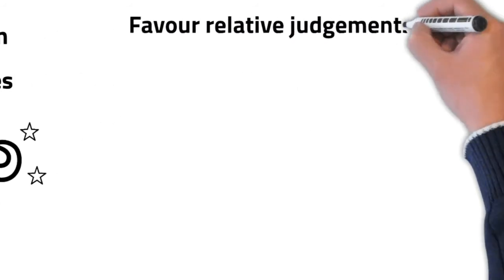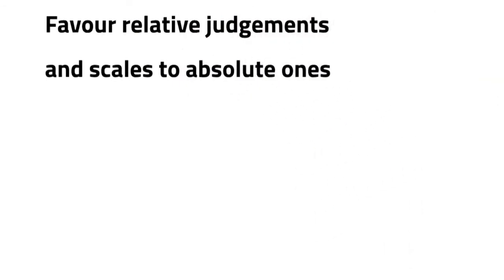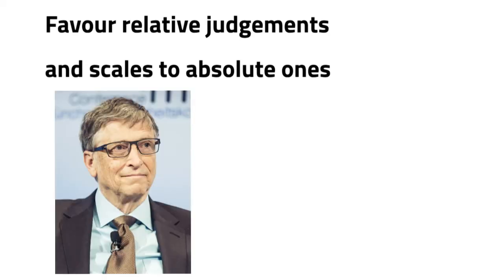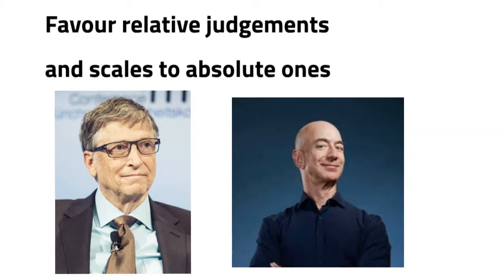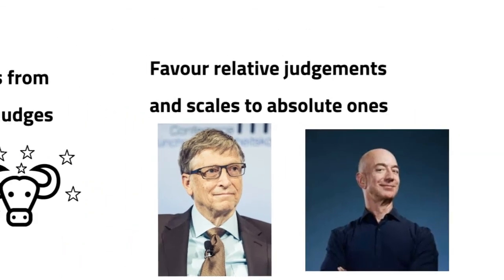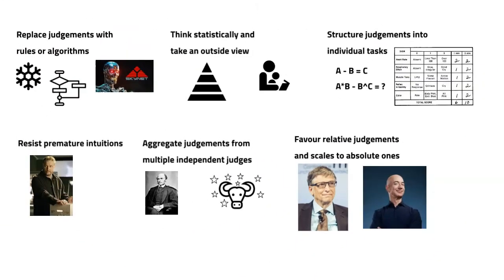Sixth: favor relative judgments and scales over absolute ones. Comparisons against each other are usually more accurate than absolute ones. For example, what is wealthy? Is a guy worth 20 million dollars wealthy? Compare that to Bill Gates or Jeff Bezos — it puts it into perspective. So by applying these six guidelines, or at least some of them, to your decisions and judgments, you should be able to wash your decisions of noise and make them sparkling clean.